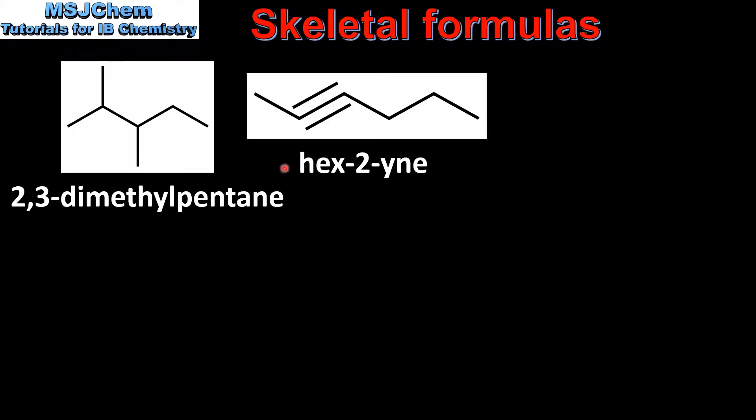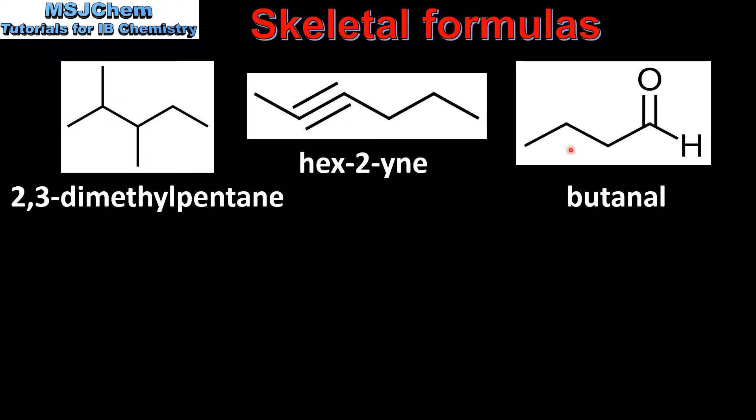Our next example has a carbonyl group, which is a carbon double bonded to an oxygen at the end of a molecule, which means it's an aldehyde. The longest continuous carbon chain is four carbon atoms, which makes it butanal.